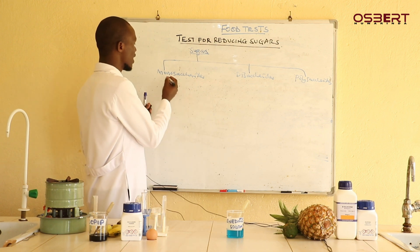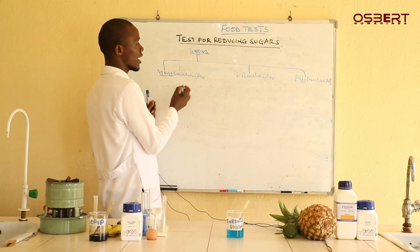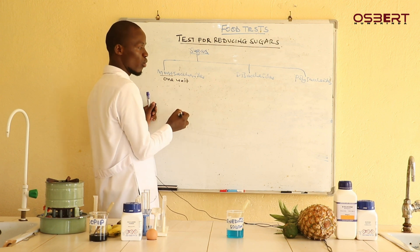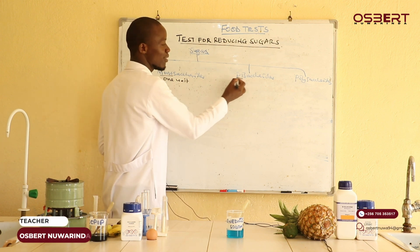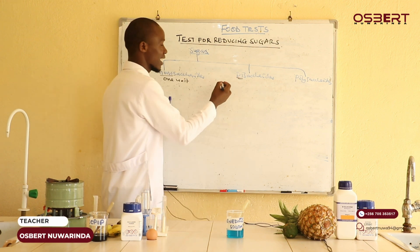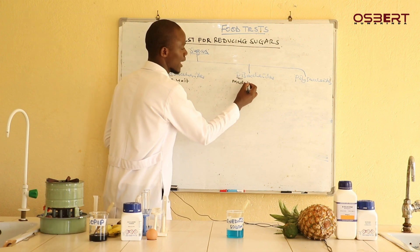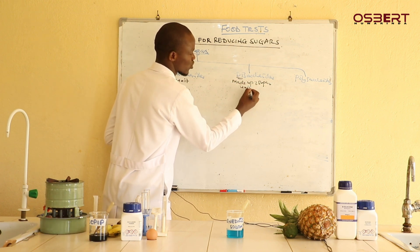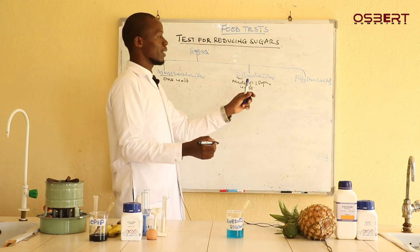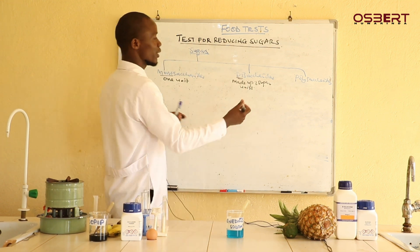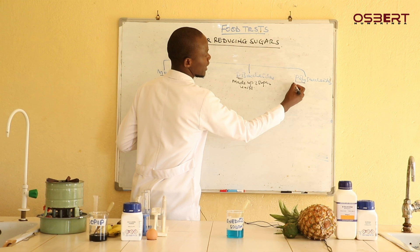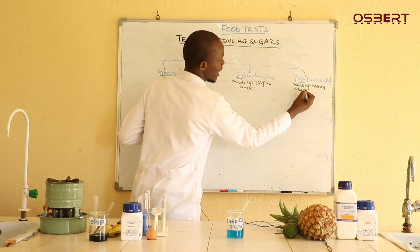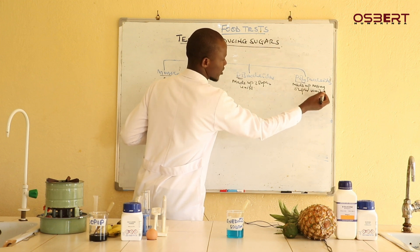Monosaccharides — mono means one, so these are sugars made up of one unit, one sugar unit. Di means two, so disaccharides are made up of two sugar units. Poly means many, so polysaccharides are sugars made up of many sugar units.